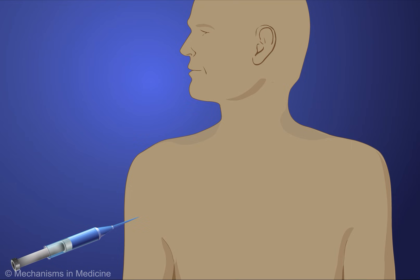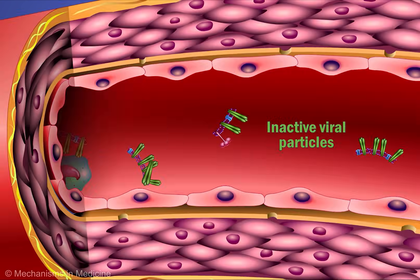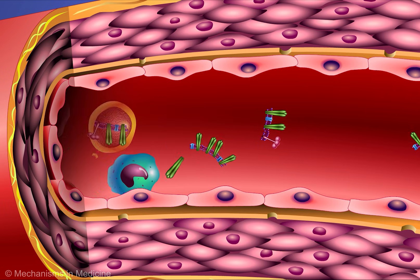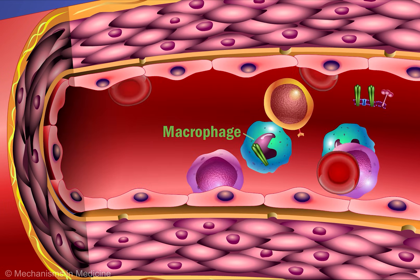These fractioned particles containing the foreign antigens hemagglutinin and neuraminidase are released from the vaccine into the bloodstream. There, they are met with an immune response mediated by various immune cells, including macrophages, T-lymphocytes or T-cells, and B-lymphocytes or B-cells.